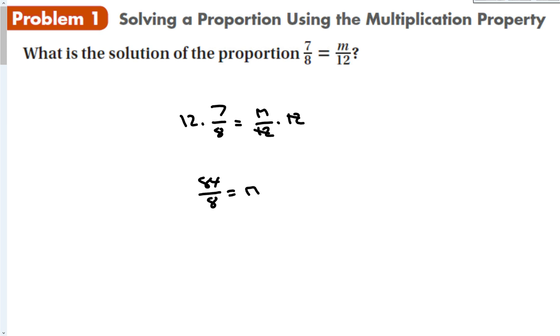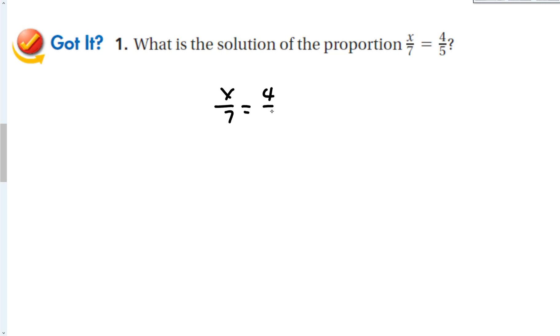84 over 8, we can reduce that as a fraction, or we can change it to a decimal. Either way, we either get 21 over 2 is equal to m, or if we want a decimal, that's 10.5 is equal to m. Let's try another one. This time, the variable is on the left-hand side. So x over 7 is equal to 4 over 5.